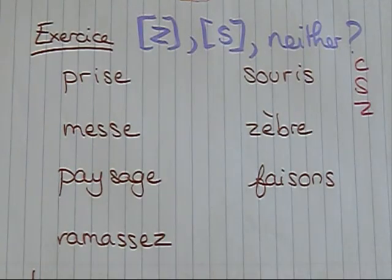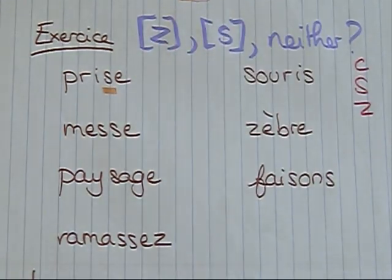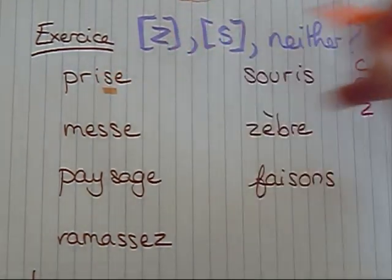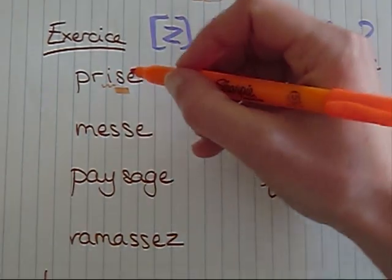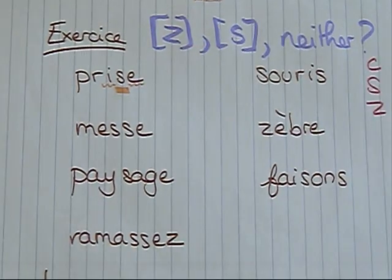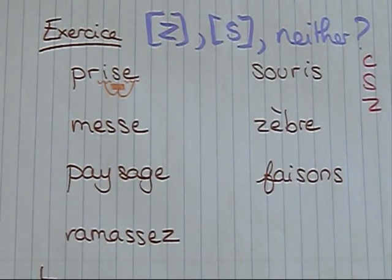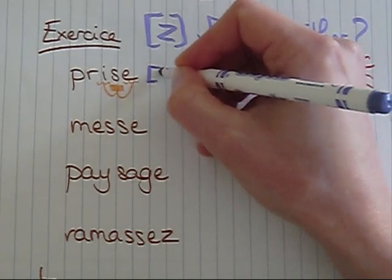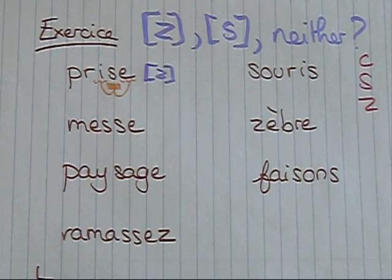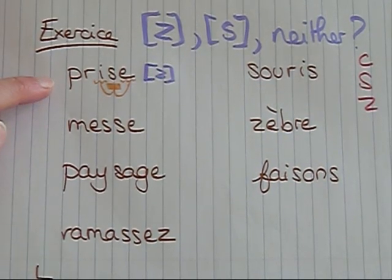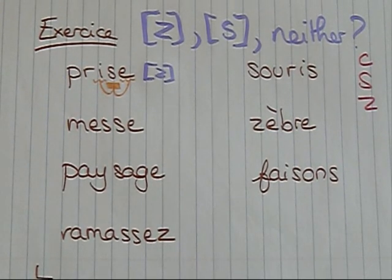First word: the grapheme we have is an S. There's only one of them, and before this S we have an I which makes an [e] sound, which is a vowel sound, and after it we've got E, which makes a vowel sound. So this is basically one of the rules we've seen today, which means the sound we will hear is a [z] sound. So this word will sound prise. Une prise is a feminine noun and it means a plug, or in martial arts it can be a hold—it comes from 'to take, taken.'